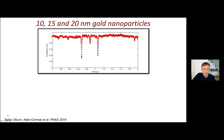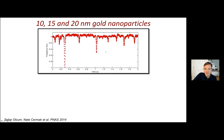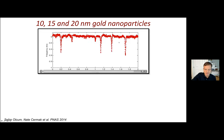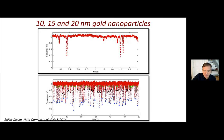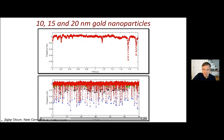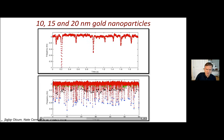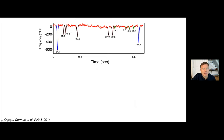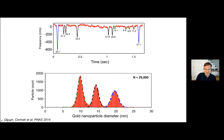Let me show you some experiments from Salim Okum and Nate Cermak, who developed this method six years ago. They mixed together three different particle types: 10, 15, and 20 nanometer gold particles. Just to calibrate you, a 10 nanometer gold particle weighs 10 attograms. Here's what they're measuring in a two second time interval. You can see all these different peaks as the particles flow through. If you look at this on a longer timescale, now we're looking at a minute timescale, you can begin to identify the different populations of particles present here.